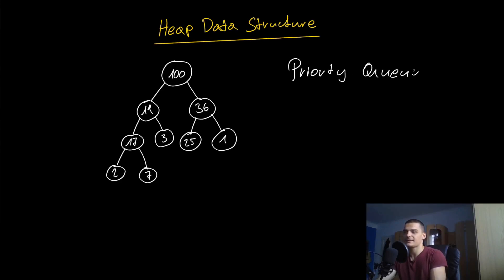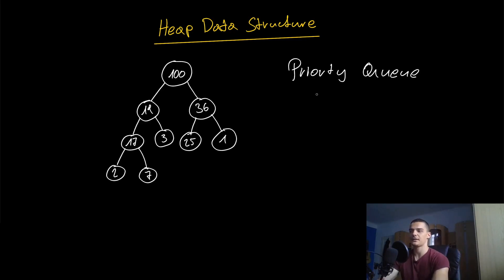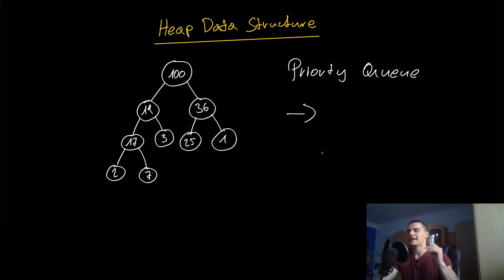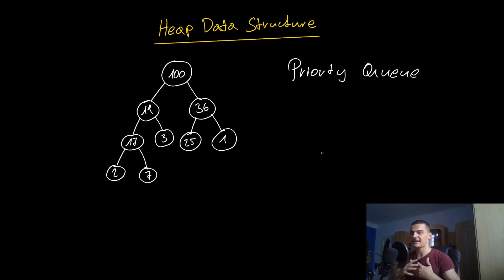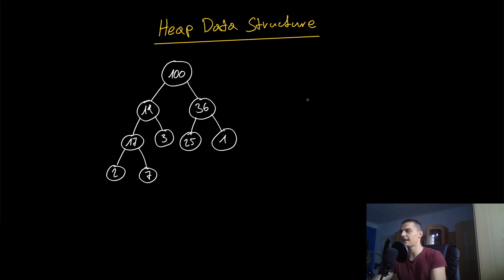Now let's go back to the idea of a priority queue. What we wanted is for elements to be processed based on their priorities — elements have a priority of one, two, three, four, five, ten, a thousand, whatever. We want to enqueue elements sorted into the list in logarithmic time, and we also want to dequeue the element with the highest priority first. With a linked list this would only be done in linear time, so we need a logarithmic approach.